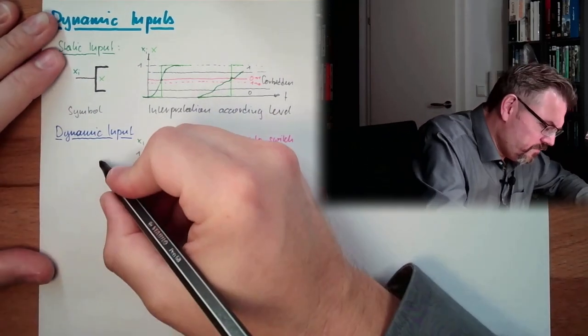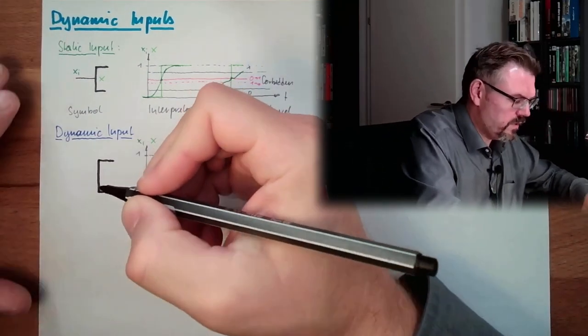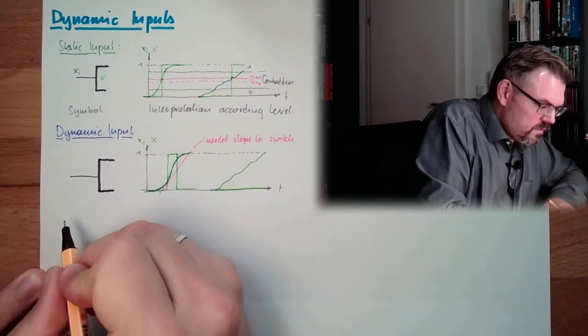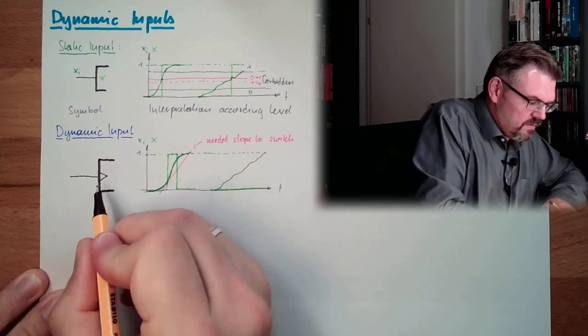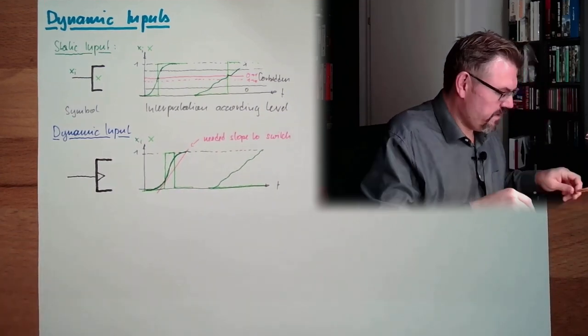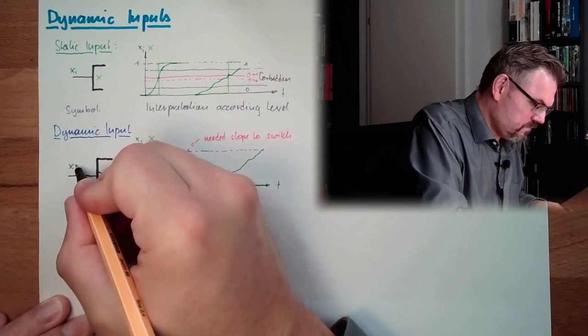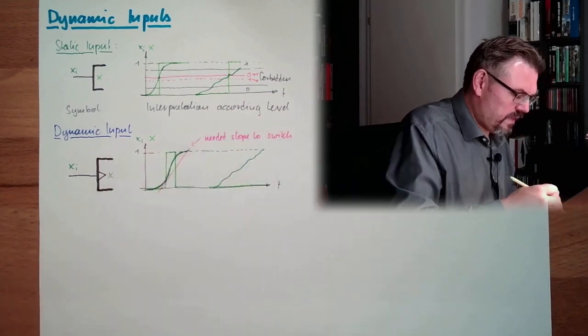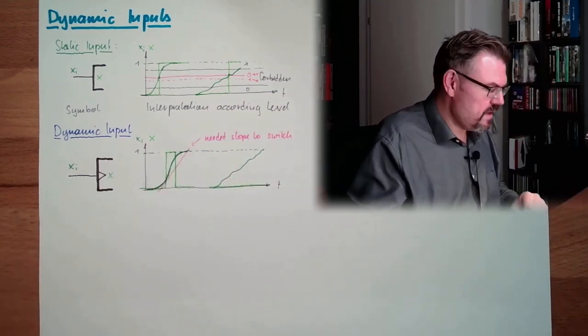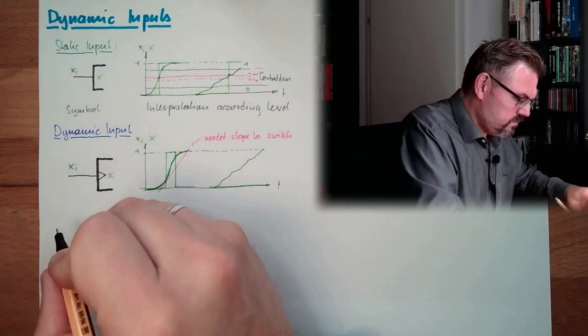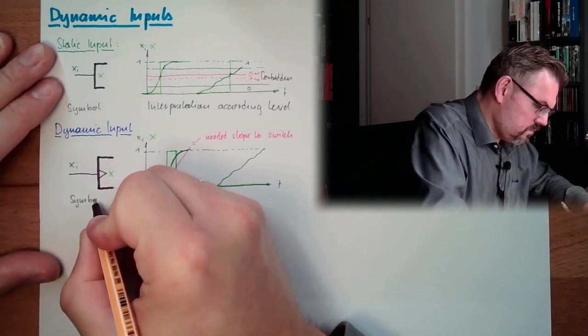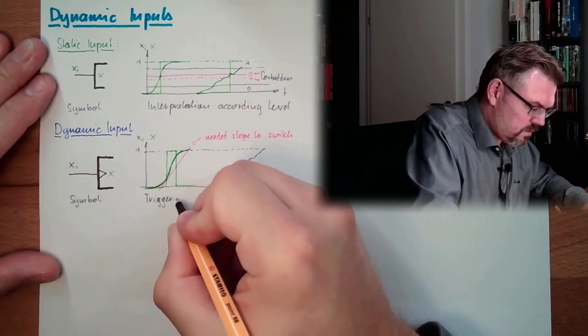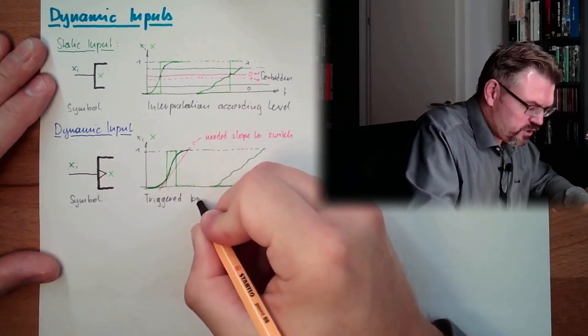So the symbol looking like that. Of course, we have also an input. And then we have a little triangle here. But we have here xi. And we have here interpreted X. That's it. That's the symbol. And triggered by a change rate.